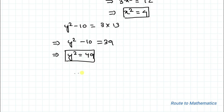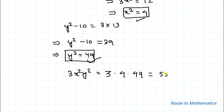We are asked to find 3x²y². We have x² = 4 and y² = 49, so 3 × 4 × 49 = 588. Our answer is 588. I hope you have understood the solution. Thanks for watching — please subscribe to my channel and click the bell icon for more interesting videos!